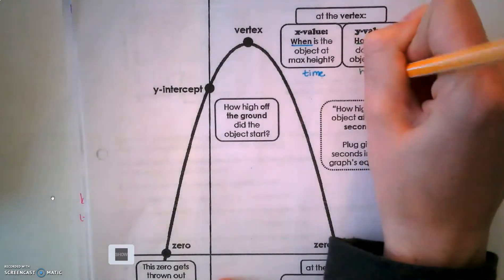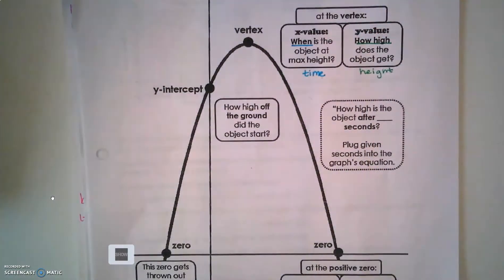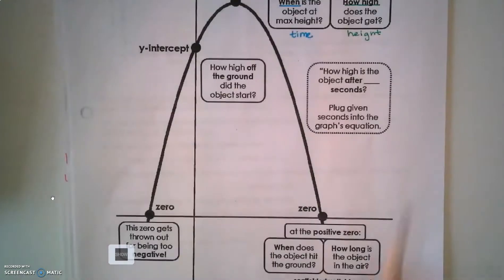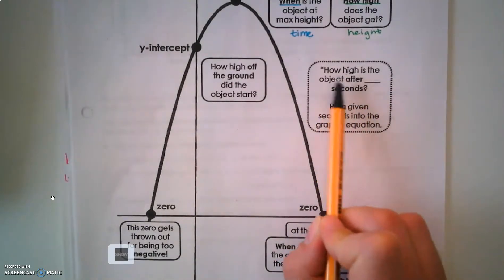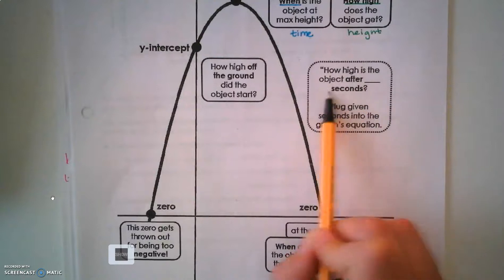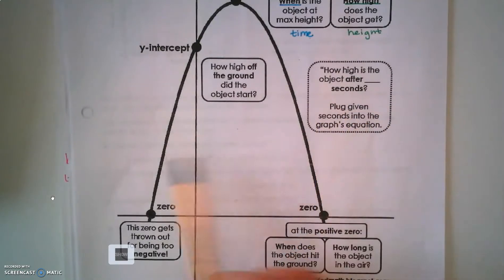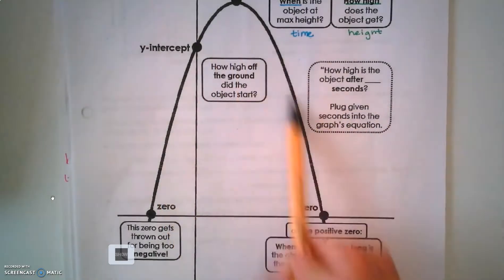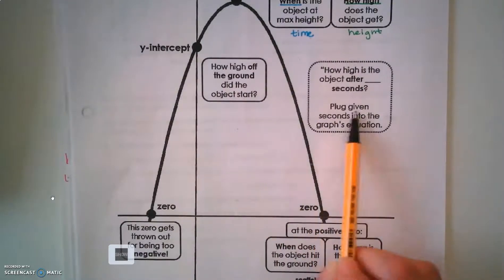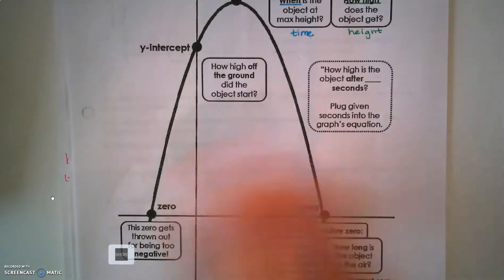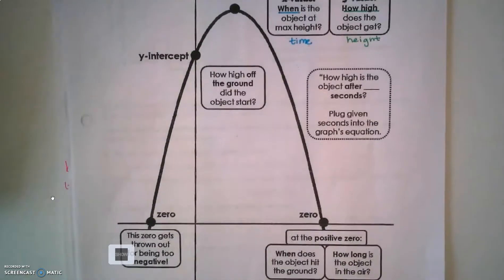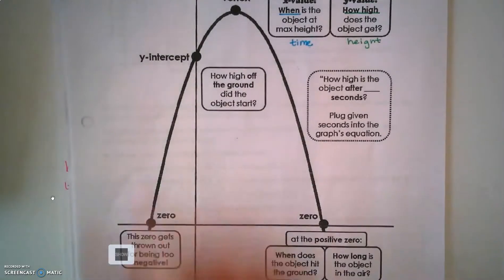The x value - typically when you see that word 'when,' that's a time. And 'how high,' that's a height. How high is the object after blank seconds could be asking for any point along our quadratic equation, and we'll plug in those given seconds into that graph's equation. This breaks down what you can ask.